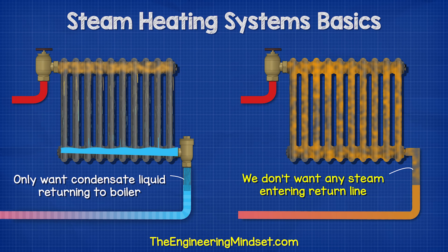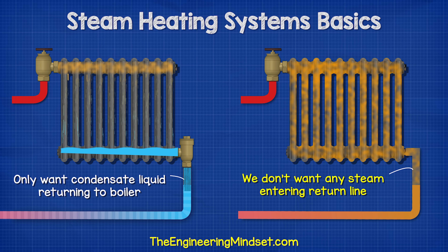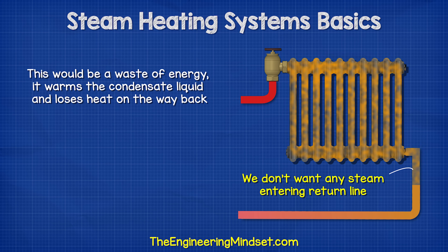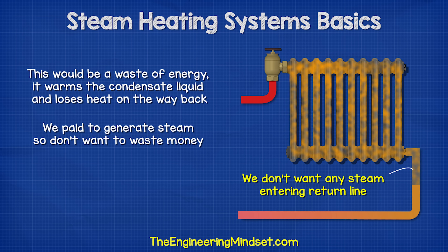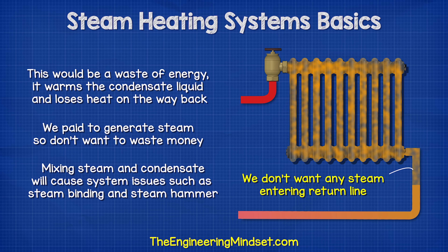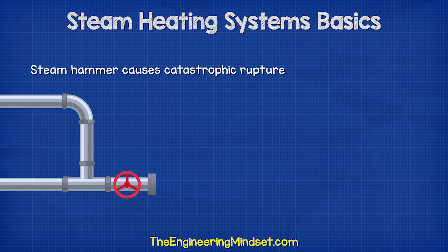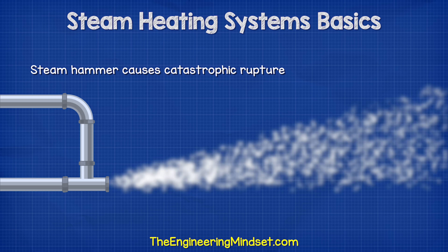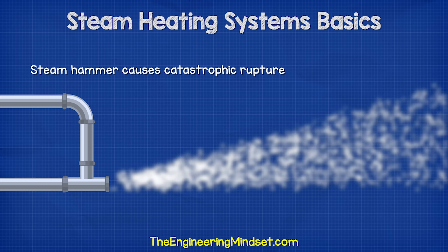We only want condensate liquid returning to the boiler. We don't want any steam getting into the return line. This would be a waste of energy, as it will warm the condensate liquid and also lose heat on the way back. We've paid to create the steam, so we don't want to waste it. Mixing the steam and the condensate will cause many problems for the system, such as steam binding and also steam hammer. This can be catastrophic for the system, so we must try to avoid this.